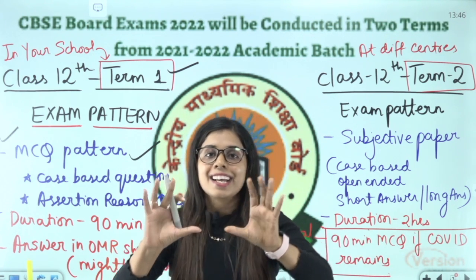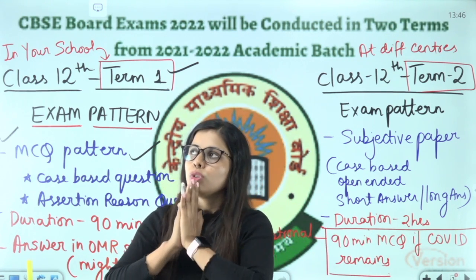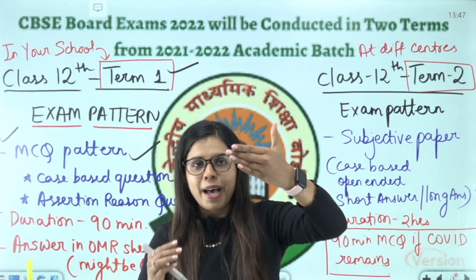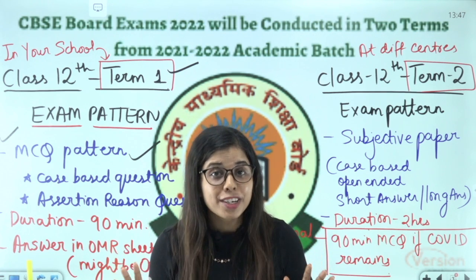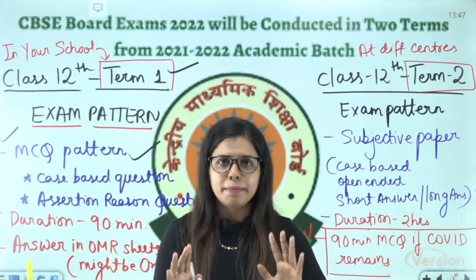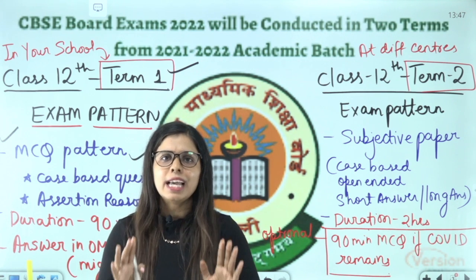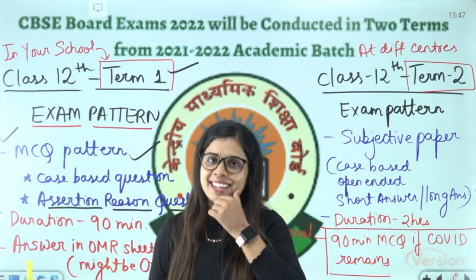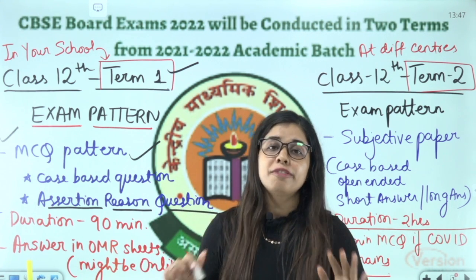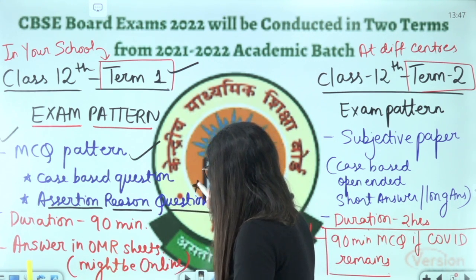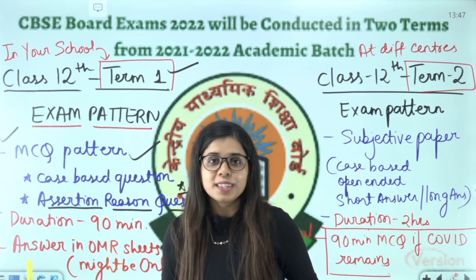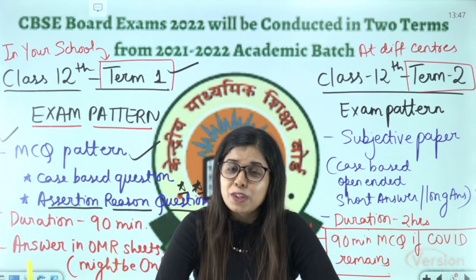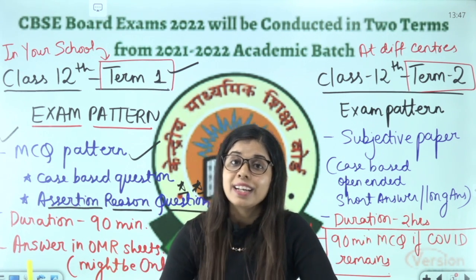There will be case-based questions. For example, take the chapter Electrochemistry — there will be 4-5 questions based on a case. There is also assertion-reason type questions: an assertion and a reason will be given and you have to choose an option. Trust me, this is considered the most difficult part for students because there are many mistakes in it. We will try completely to train you in these two kinds of questions.